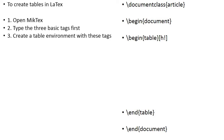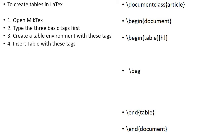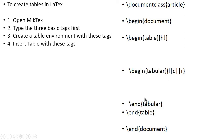Now we have defined the environment for the table. Everything — that is caption, label, and the table itself — will go inside these two tags. Now let's insert these three things: caption, label, and table inside the begin/end table tags. To insert the table, use \begin{tabular} and \end{tabular} commands. These are the two tags required for inserting the table.